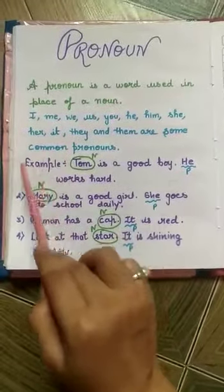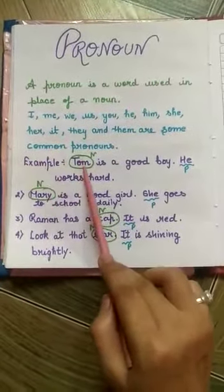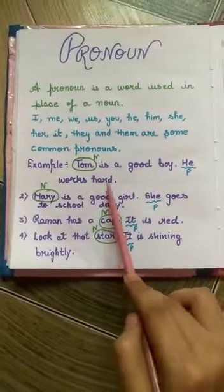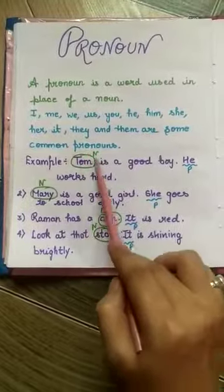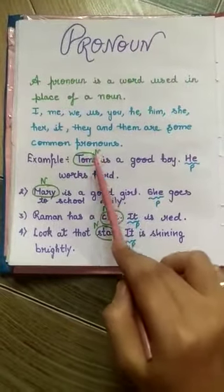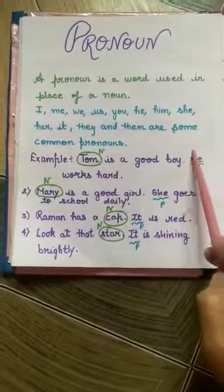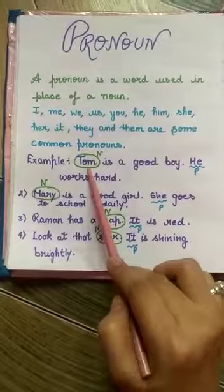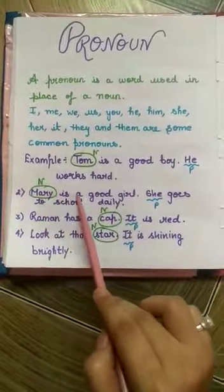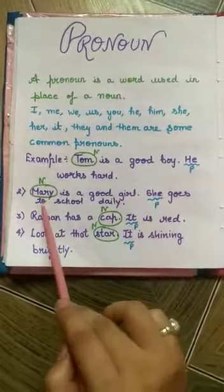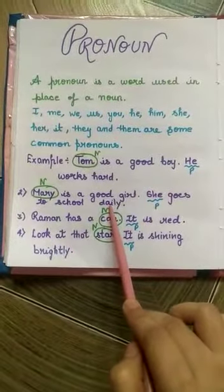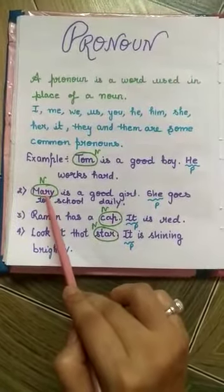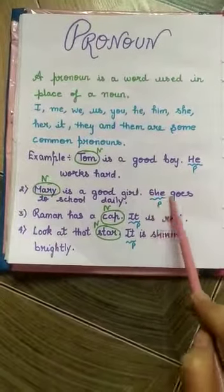Let's study certain examples. Tom is a good boy. He works hard. In this sentence, Tom is a noun and we replace this noun by pronoun he. He is used for Tom. Mary is a good girl. She goes to school daily. In this sentence, Mary is a noun and we replace Mary by pronoun she.